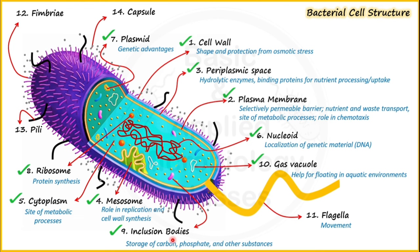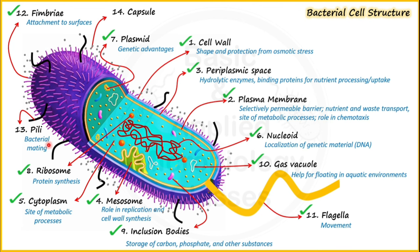Fimbriae are structures on the outer side of the bacterial cell that help bacteria in attachment. A maximum of up to 1000 fimbriae can be found on a bacterial cell. Pili are also hair-like or thread-like surface appendages but are larger in size than fimbriae. Pili help bacteria in bacterial mating — for example, sex pili are involved in conjugation — and some pili, like type IV pili, are also known to provide bacterial movement.